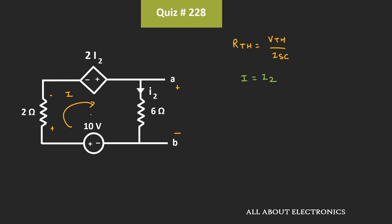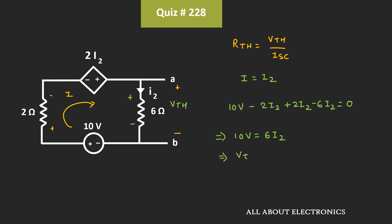We can replace this current I by I2. Applying KVL in this loop, we can write: 10V - 2·I2 - 6·I2 = 0. That means 10V is equal to 6·I2, and the Thevenin's equivalent voltage Vth is equal to 6·I2.